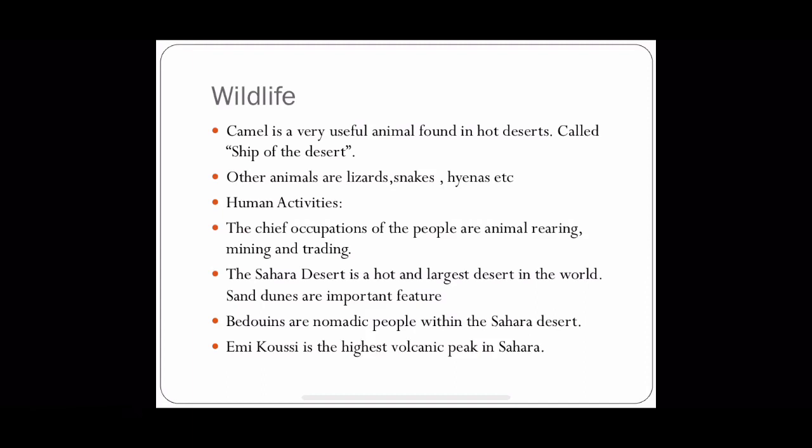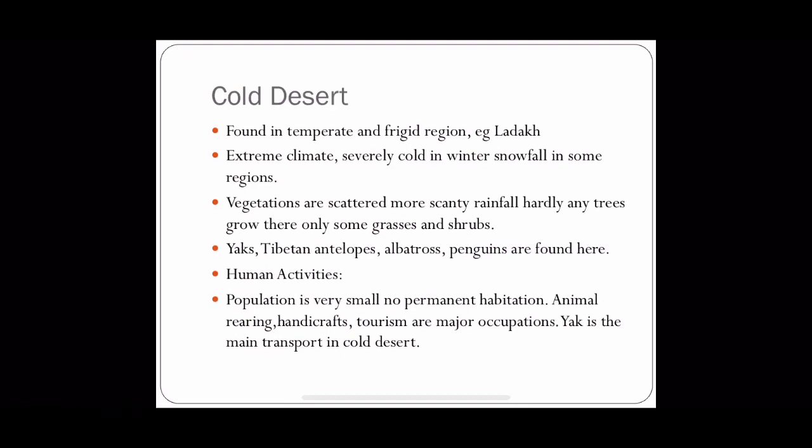We have finished the discussion about hot deserts. Let us go to the cold deserts. They are found in the temperate and frigid regions. The important cold desert is Ladakh, which lies in the eastern part of Jammu and Kashmir in India. Gobi Desert, the largest desert in Asia, is a cold desert.